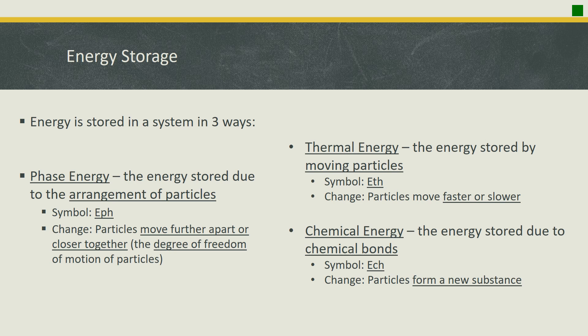There are three types of energy to become familiar with: phase energy (EPH), thermal energy (ETH), and chemical energy (ECH). Phase energy reflects that different phases have different amounts of energy — solids have the least, liquids have more, gases have the most — because of the energy associated with particle arrangement. Thermal energy is directly related to temperature and is stored by the movement of particles: faster movement means higher temperature and more energy, slower movement means lower temperature and less energy.